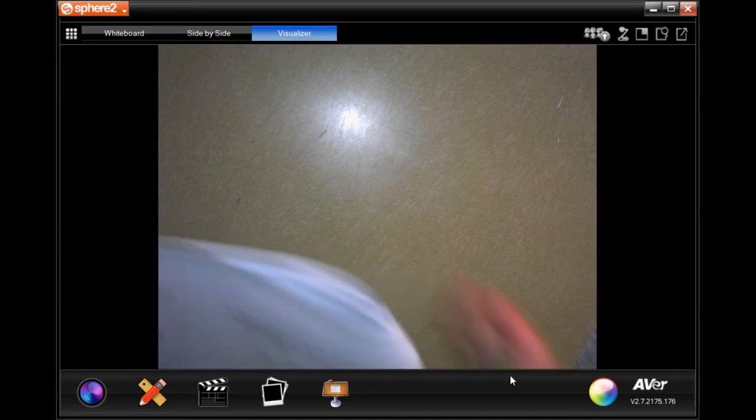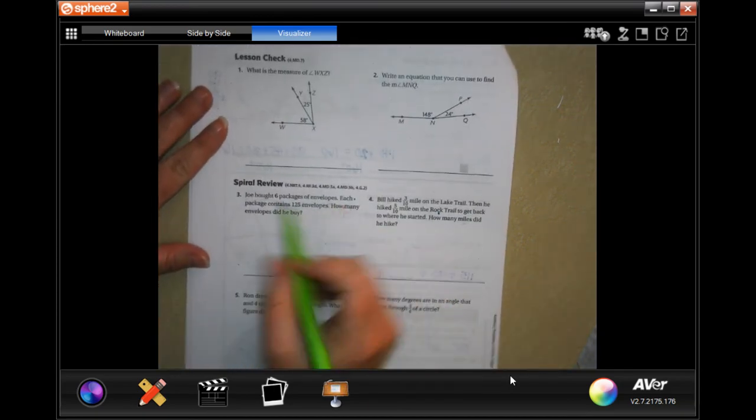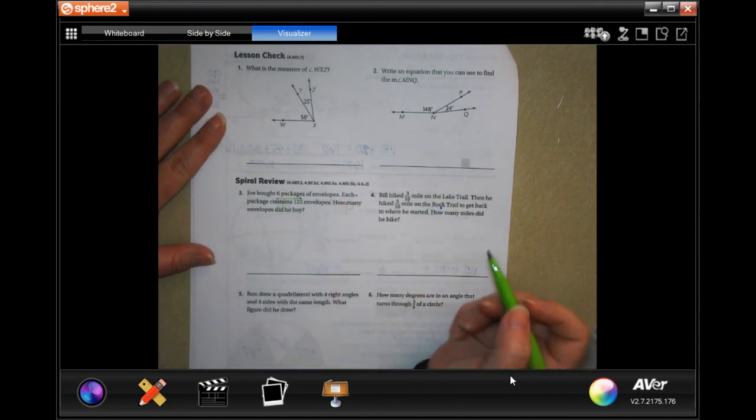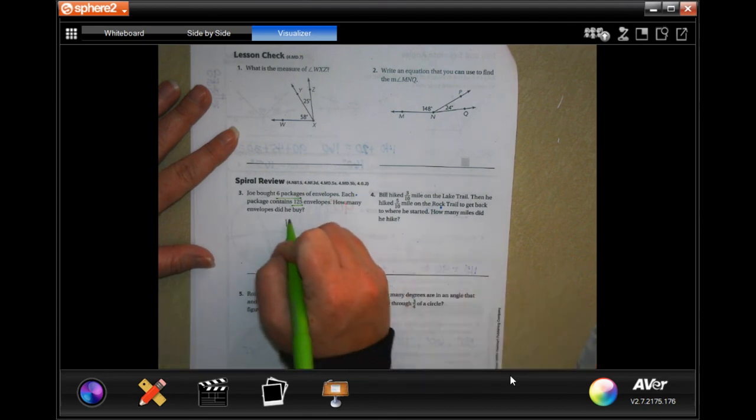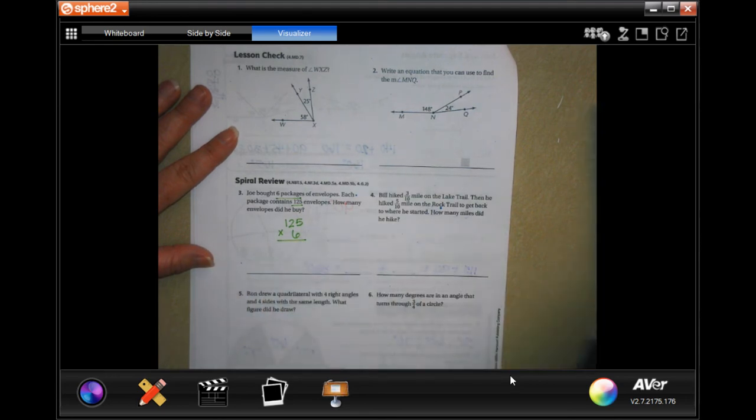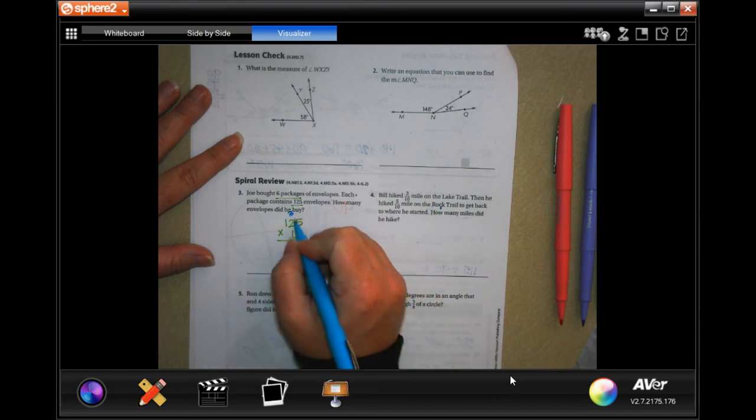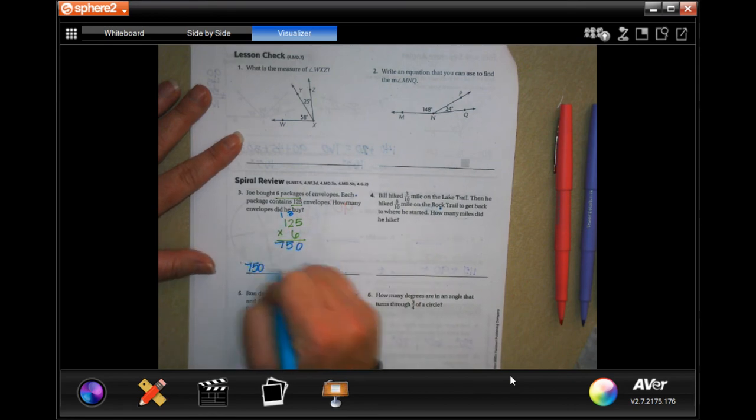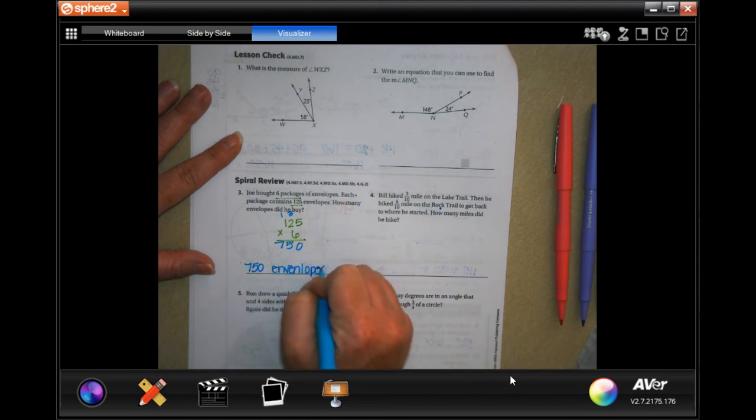We're going to go ahead on to the back where you guys are going to do the lesson check, just like always. We're going to go down and do the spiral review. It says Joe bought six packages of envelopes. Each package contained 125 envelopes. How many envelopes did he buy? So 125 times 6. Six times five is 30. Carry the three. Six times two is 12 plus three is 15. Carry the one. Six times one is six plus one is seven. Seven hundred and fifty. And we're going to put envelopes.